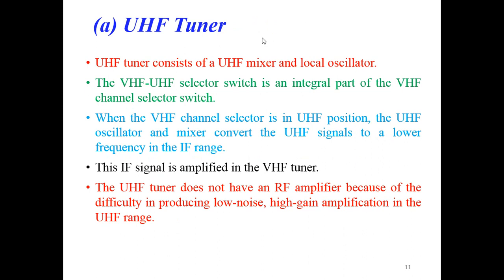The UHF tuner consists of a UHF mixer and local oscillator. The VHF/UHF selector switch is an integral part of the VHF channel selector switch. When the VHF channel selector is in the UHF position, the UHF oscillator and mixer convert the UHF signal to a lower frequency in the IF range. This IF signal is then amplified in the VHF tuner. VHF stands for very high frequency and UHF stands for ultra high frequency. The ultra high frequency tuner does not have an RF amplifier because of the difficulty of producing low noise, high gain amplification in the UHF range.